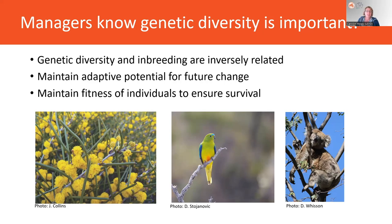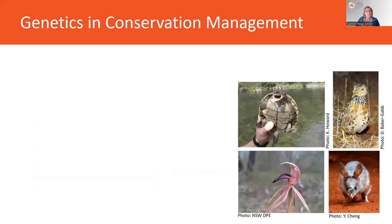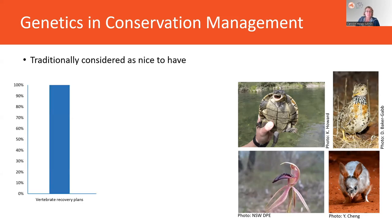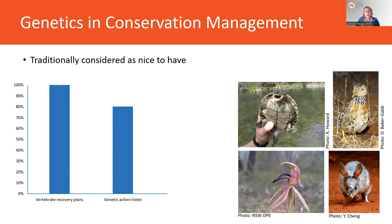Back in 2018, we undertook an investigation to understand why genetics was not really being used in conservation management. When we looked at 200 national vertebrate recovery plans, we found that it was really just traditionally considered a nice to have. However, more than 80% of the recovery actions did in fact require some form of genetic action. But when we dug down into it, less than 15% of the species at a national level were using genetic data to inform their recovery actions.